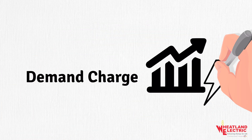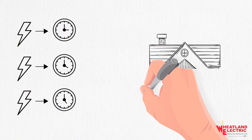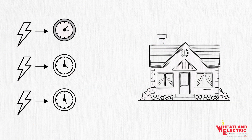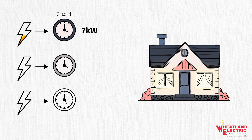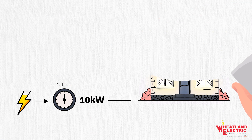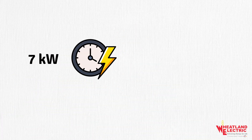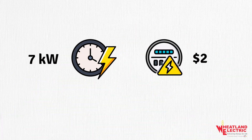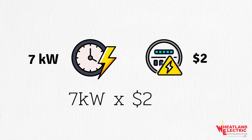The demand charge is calculated differently, and it is something each member can control. It is determined by the maximum demand of energy at any point within the billing cycle, multiplied by the applicable rate for a member's specific rate class. For example, if seven kilowatts were the highest demand for the billing month at a cost of two dollars per kilowatt, your demand charge would be 7 kW × $2.00 = $14.00.